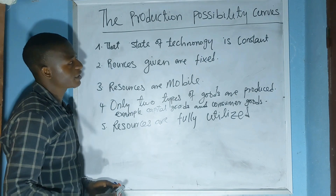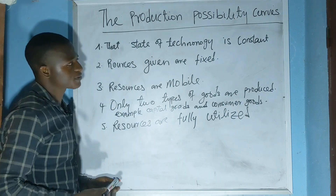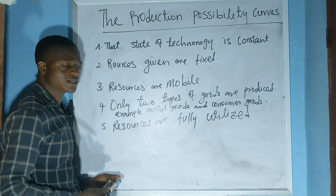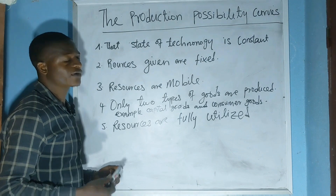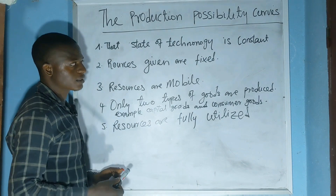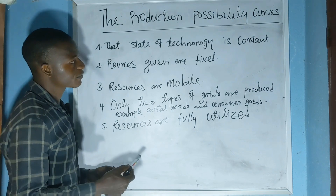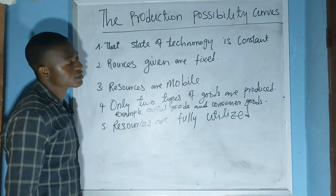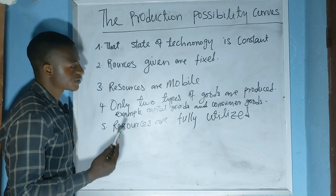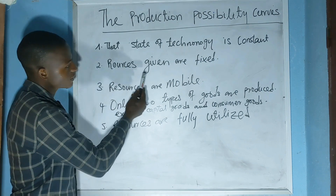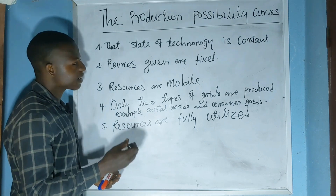These resources can include land, labor, capital, and enterprise. The production possibility curve is based on numerous assumptions. The first is that the state or level of technology is constant — this means that the method of production and efficiency of productivity do not change over time.